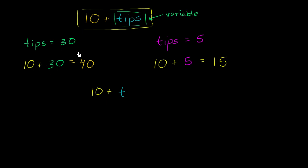And so then we would say, okay, what happens when t is equal to 30? Well, if t is equal to 30, this evaluates to 10 plus 30, which would be 40. What would happen if t is equal to 5? Well, then this would evaluate to 10 plus 5, which is equal to 15.